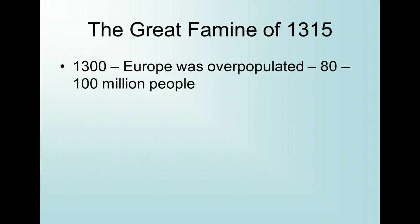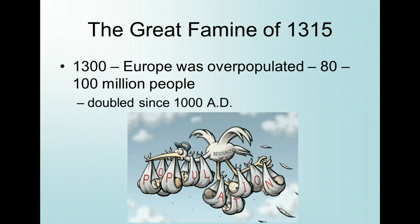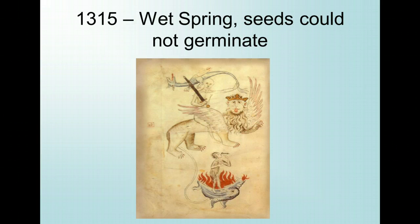At the same time, however, the Western European climate was undergoing a slight change, with cooler and wetter summers and earlier autumn storms. Conditions were no longer optimum for agriculture. There had been famines before, but none with such a large population to feed, and none that persisted for so long.